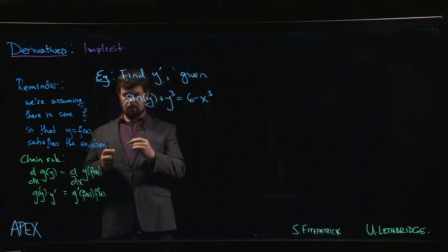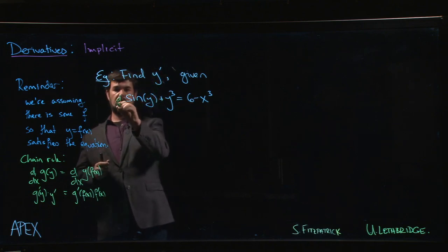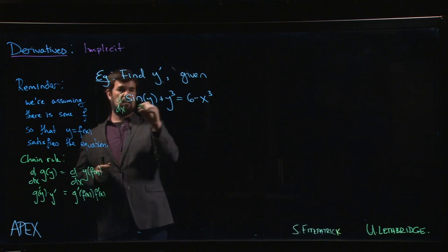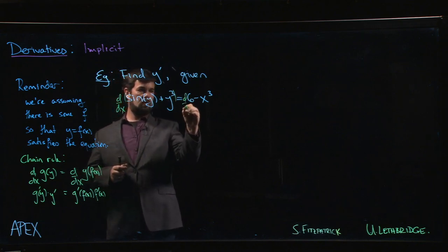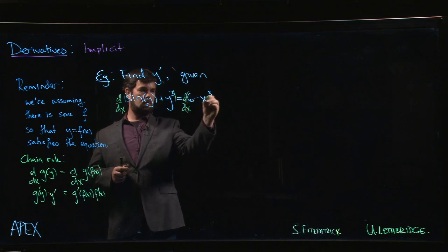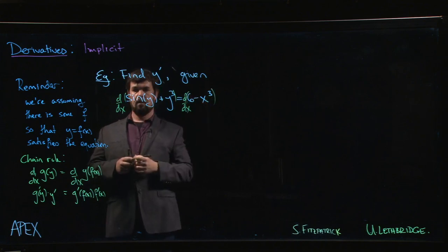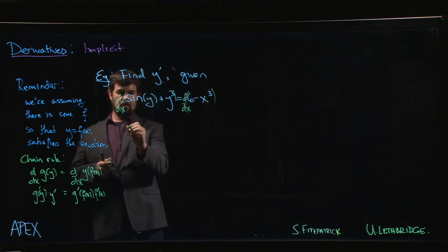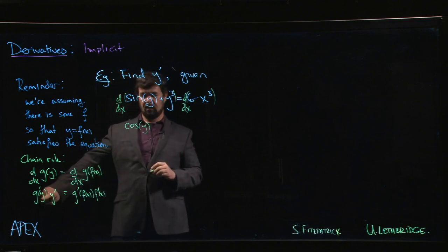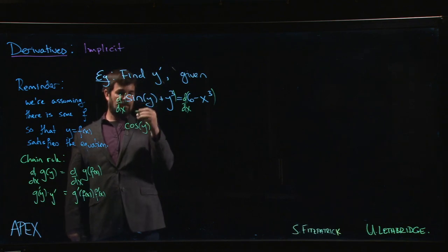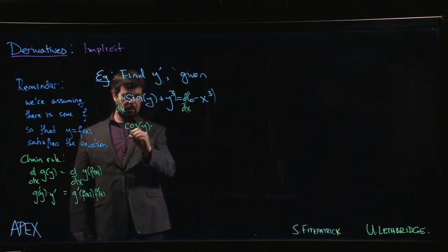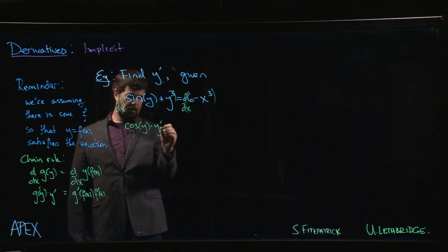So coming over to here, we take the derivative of both sides and we see what we get. So the derivative of sine is cosine, but here we're in exactly this scenario. We've taken the derivative of some function of y, and any time you take the derivative of a function of y, you multiply by y prime.